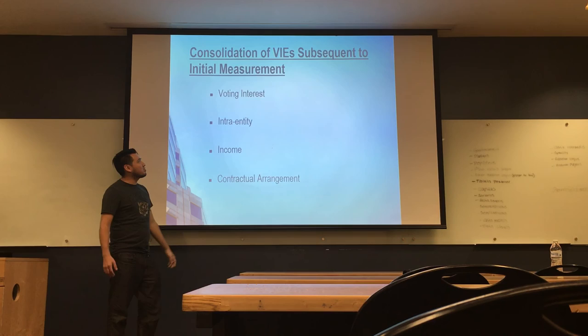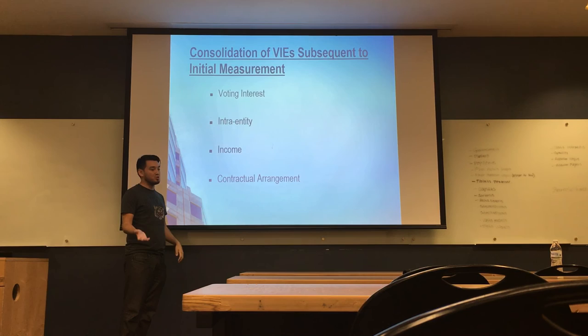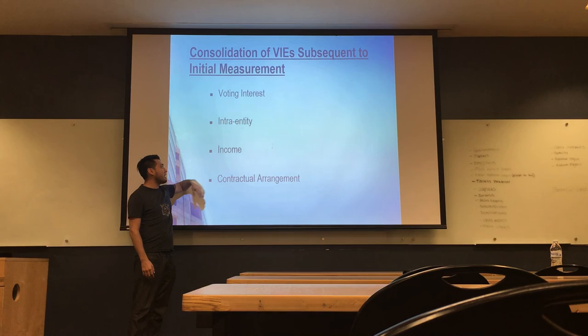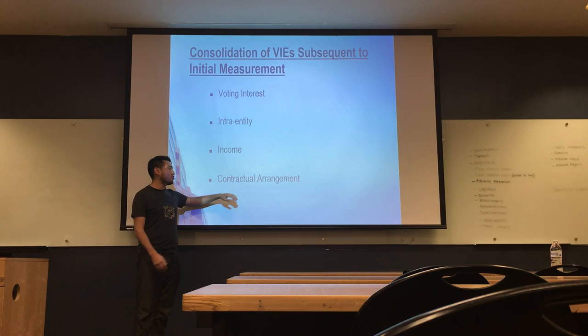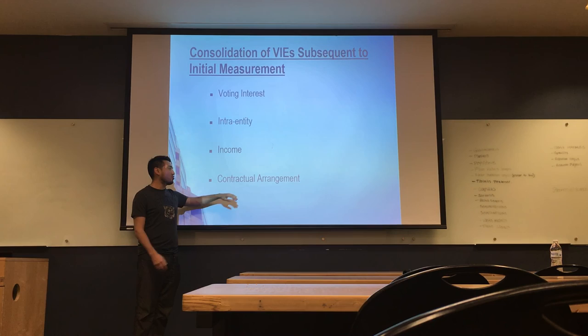For subsequent consolidation after the initial measurement, the process is essentially the same. Intercompany entries must be eliminated, income must be allocated among the different parties involved, and the contractual arrangement normally specifies how income will be allocated. That's everything for today — thank you for your attention.